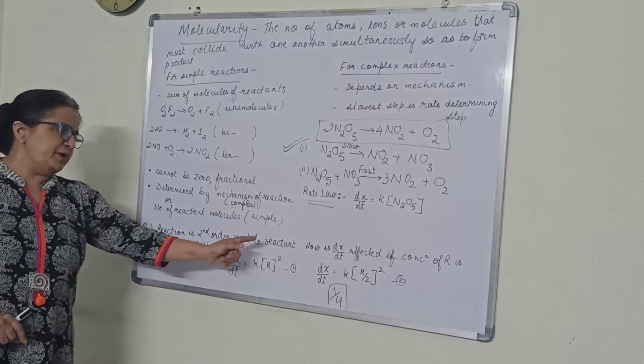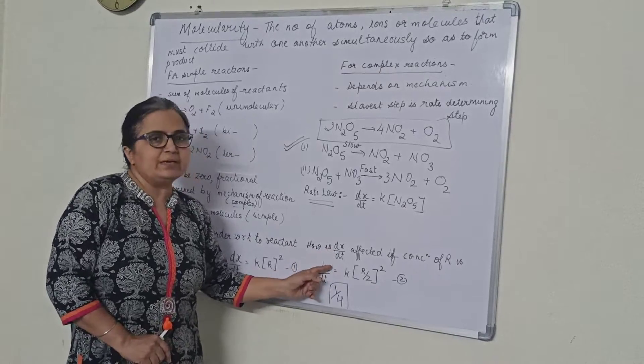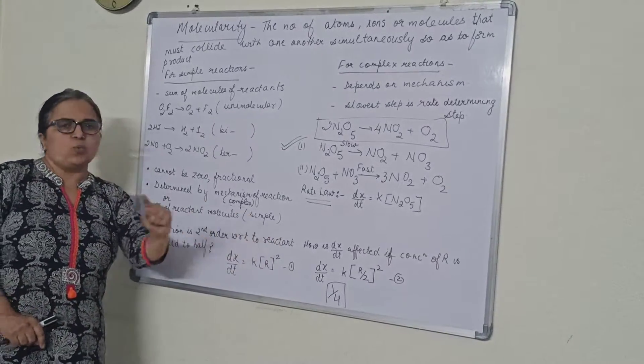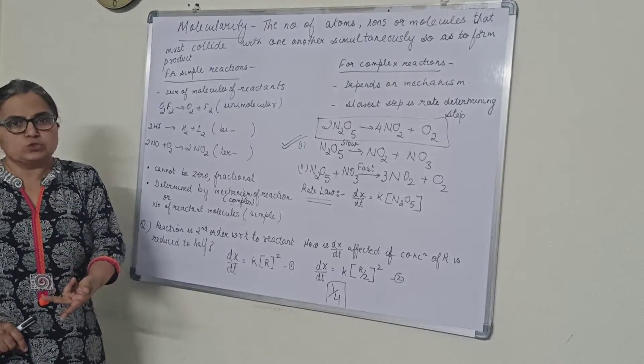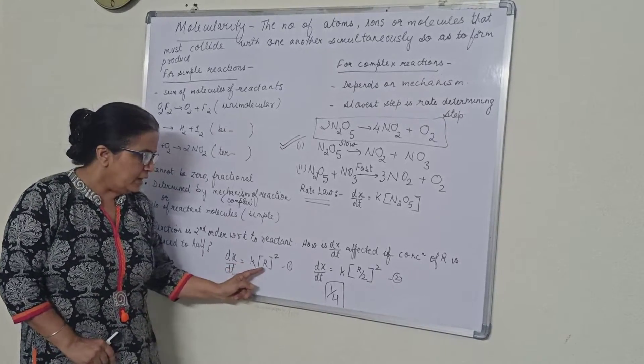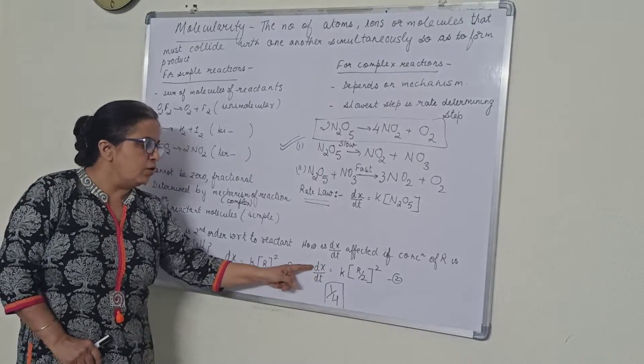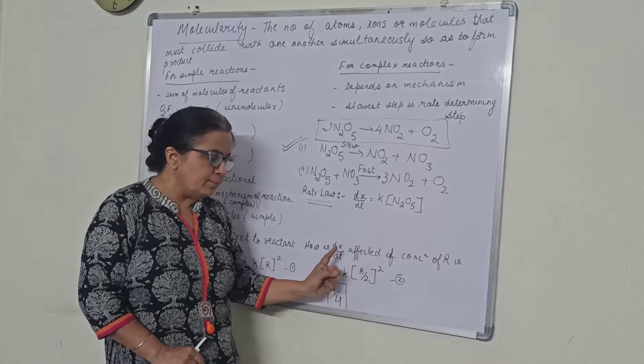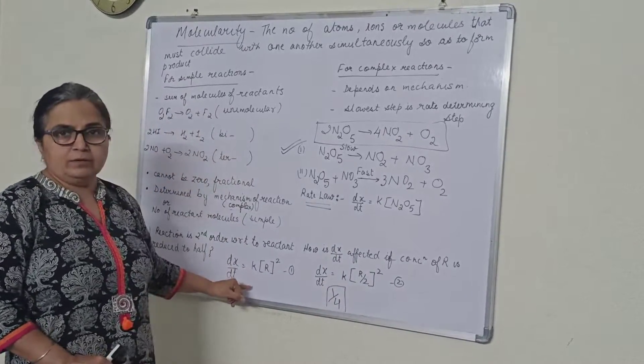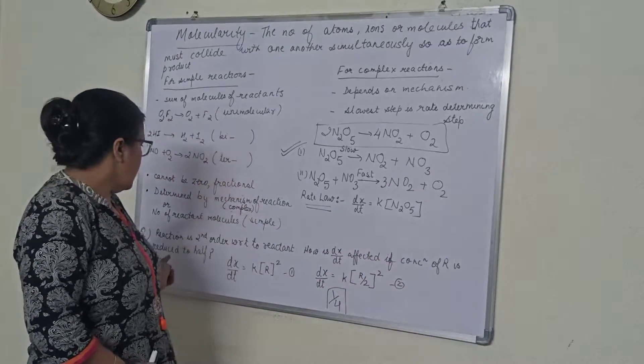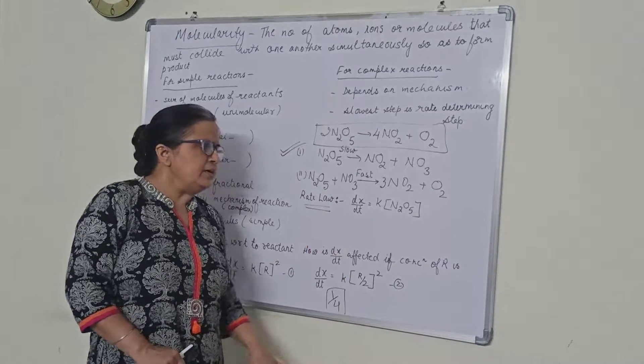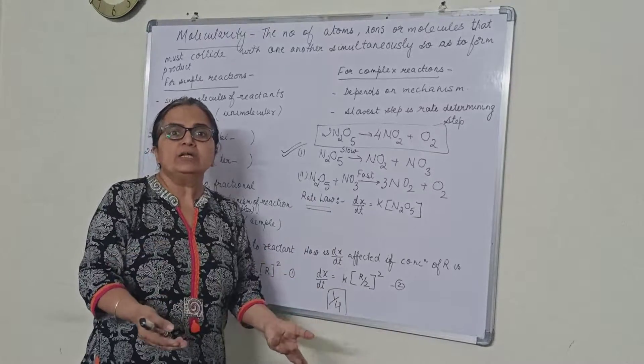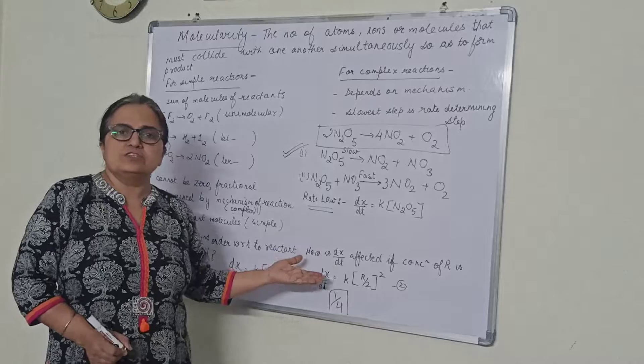A reaction is second order with respect to the reactant. They are asking, how is dx by dt, means rate of reaction, affected if the concentration of R is reduced to half? Depending upon what is given in the question, first we write the rate law. It is second order with respect to the reactant. So we will write dx by dt is equal to K, R to the power 2. Now, they are saying, if the concentration of R is reduced to half, means it is now R by 2. If I do this, R by 2 square, it will become R square by 4. That means one fourth of the first one. So what is the effect on the rate of reaction? If the concentration is halved, it will be 1 by 4. It can be anything else. If you double concentration of R, if you make it 1 by 4, if you make it 4 times, make it 3 times, what is the effect on the rate of the reaction? So variety of questions can be framed from this part.